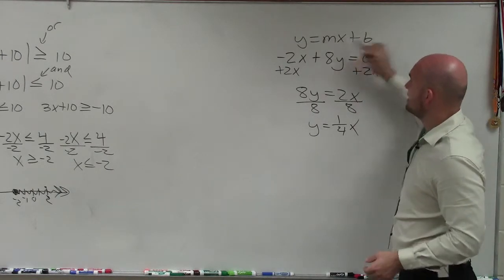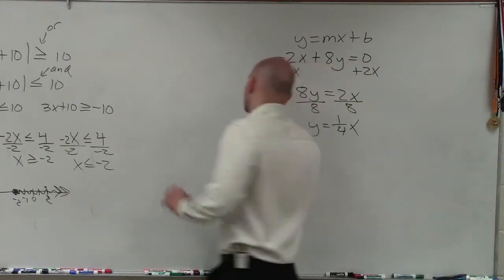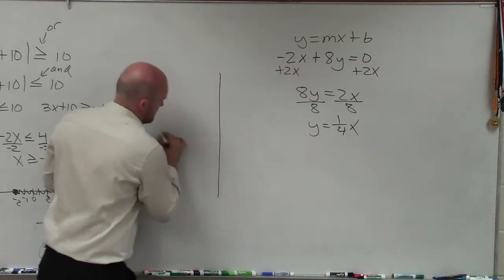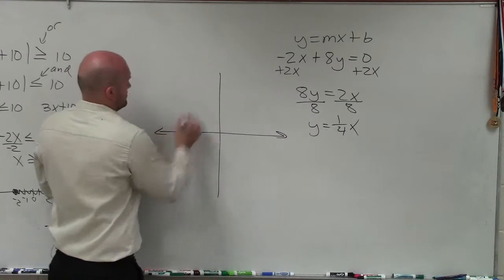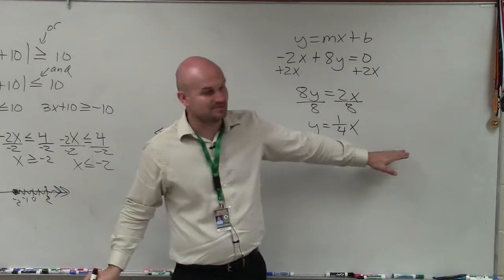So in this case though, you can see that my b, I don't have a b. So therefore, that's why I know that my y-intercept is at 0. So my y-intercept is at the coordinate point 0, 0, because I do not have a y-intercept here.